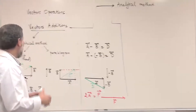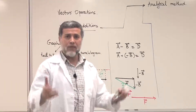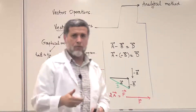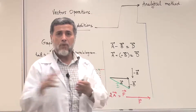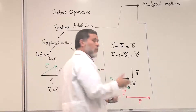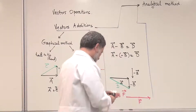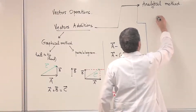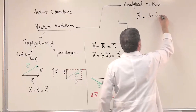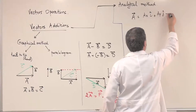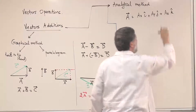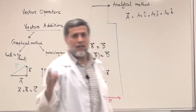Another way of adding, subtracting vectors, or multiplying a vector by a scalar is the analytical method. We can represent a vector by its components along the X, Y, and Z axes using unit vector notation. So vector A has components: AX·i + AY·j + AZ·k, where AX, AY, and AZ are the components of vector A along the X, Y, and Z axes respectively, and they can be positive, negative, or zero.